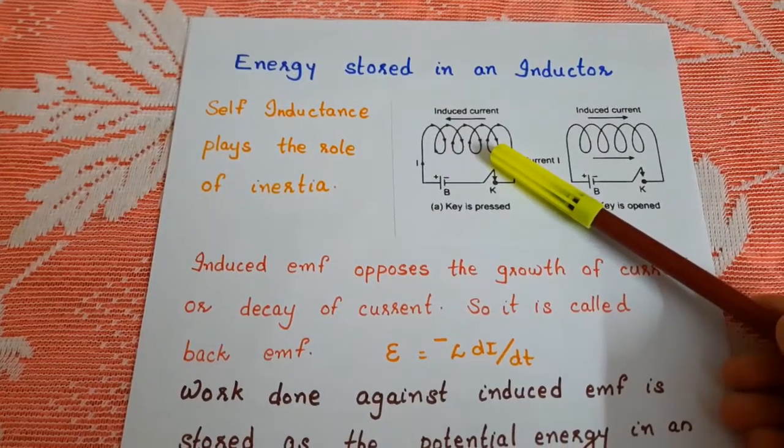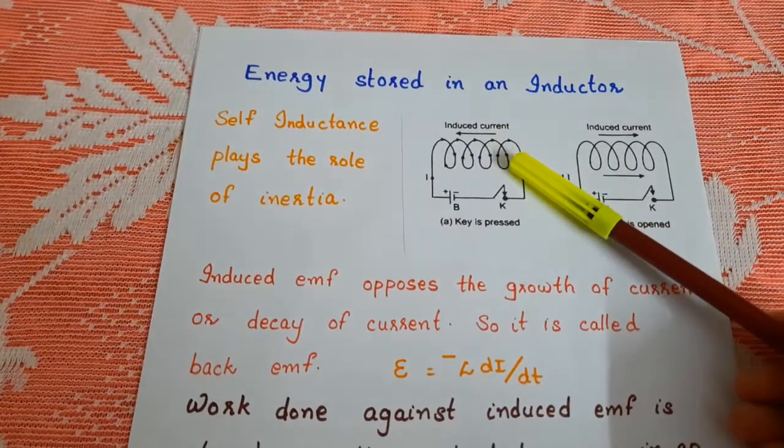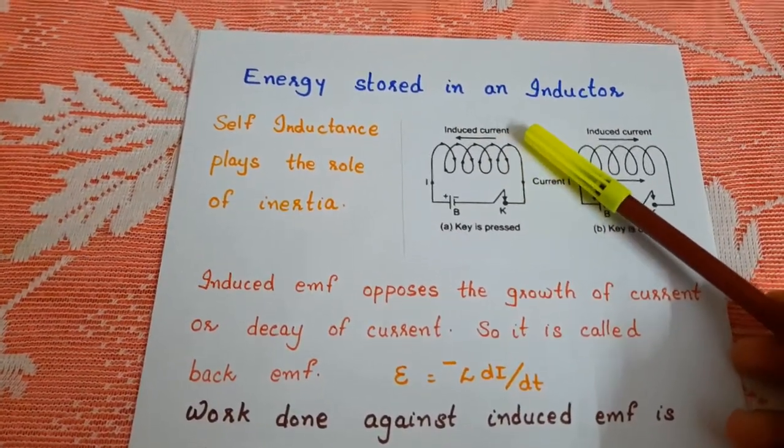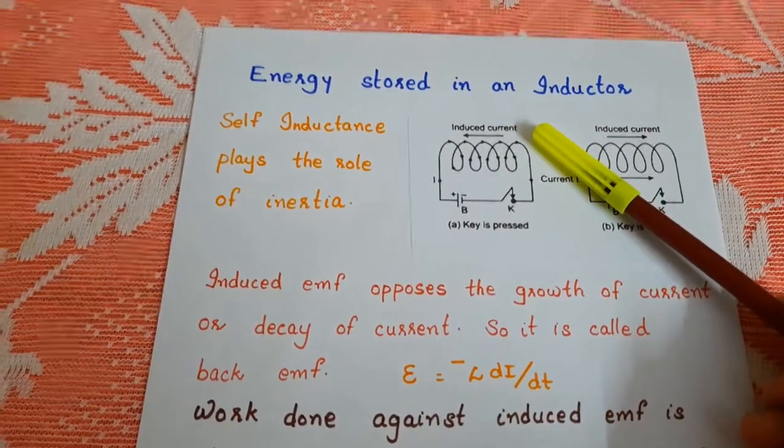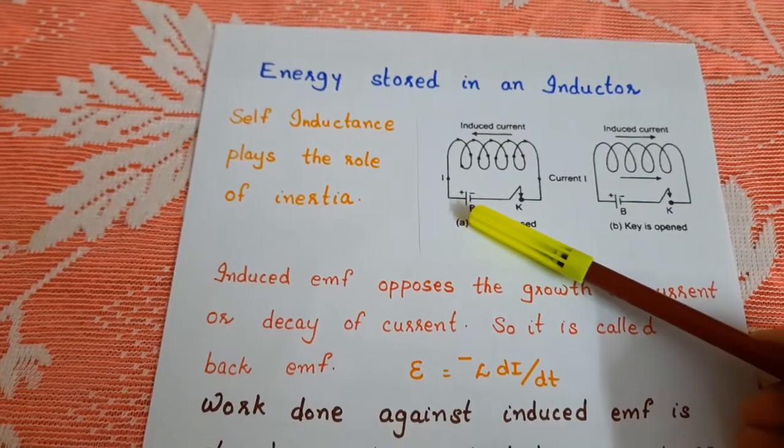The increasing flux produces a current which opposes the growth of current through the coil. So the induced current will be in a direction opposite to the current from the cell.